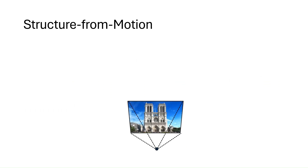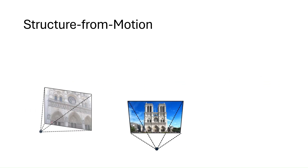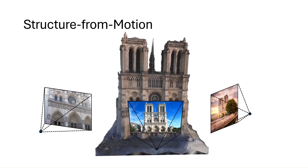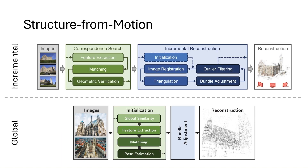Structure from Motion addresses the problem of estimating 3D structures and camera positions from a collection of images. Broadly speaking, SfM methods are categorized into two types: incremental methods and global methods.